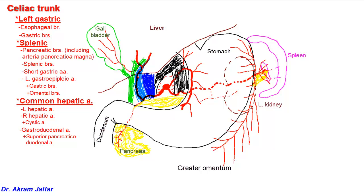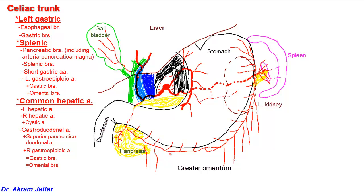In addition to the superior pancreaticoduodenal artery, the gastroduodenal artery supplies the right gastroepiploic artery, which passes within the two leaves of the greater omentum along the greater curvature of the stomach, and will anastomose with the left gastroepiploic artery. The right gastroepiploic artery has gastric branches supplying the anterior and posterior surfaces of the stomach along the greater curvature, and also supplies epiploic or omental branches to the greater omentum. So the gastroduodenal artery is named so because it supplies a gastric branch — the right gastroepiploic artery — and a duodenal branch — the superior pancreaticoduodenal artery.